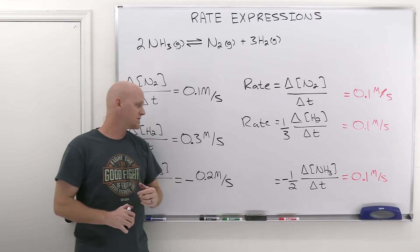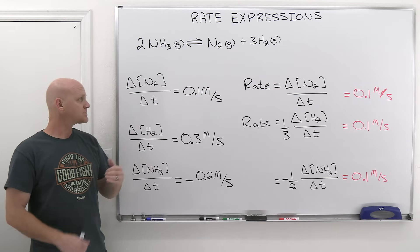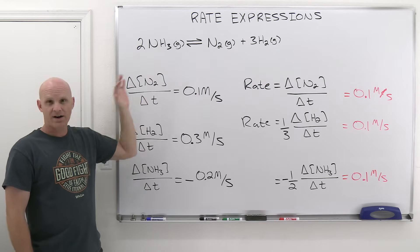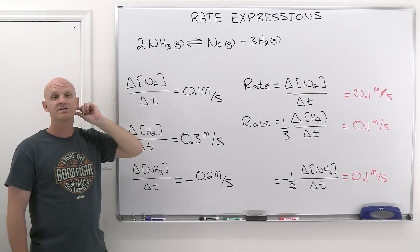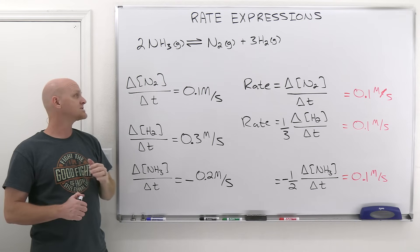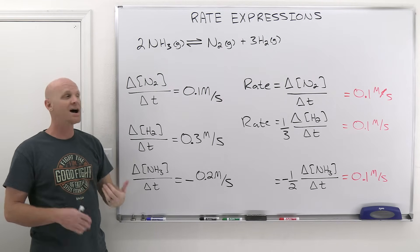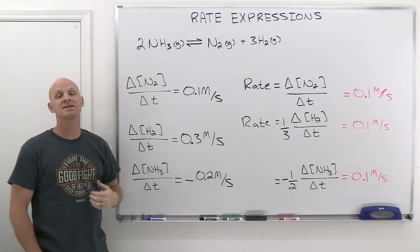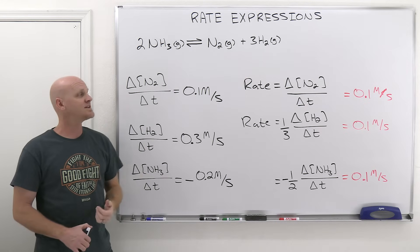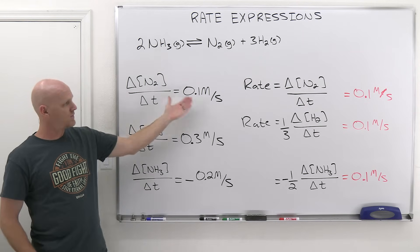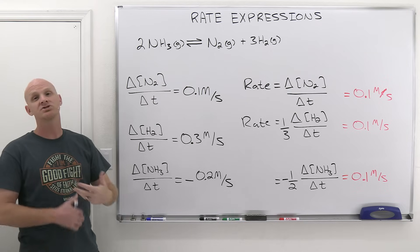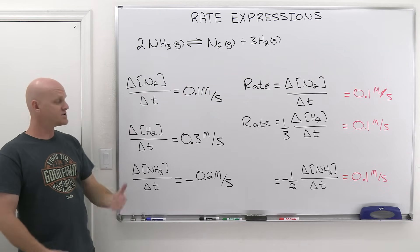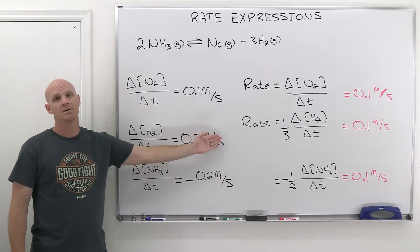One last thing I want to give you here so that you'll be very careful. If for this reaction, based on all the data I've got up here, if I said what is the change of the concentration of N2 over time, 0.1 molar per second. If I said what is the rate at which N2 is being produced, 0.1 molar per second. If I said what is the rate of change or the rate of production for H2, it would be 0.3 molar per second. But for reactants, you've got to be very careful.